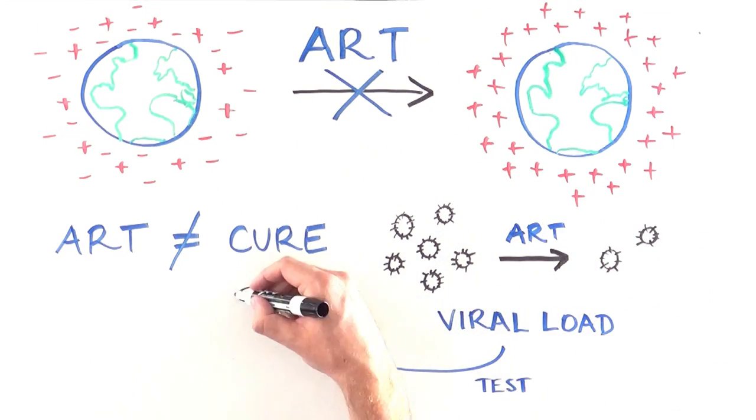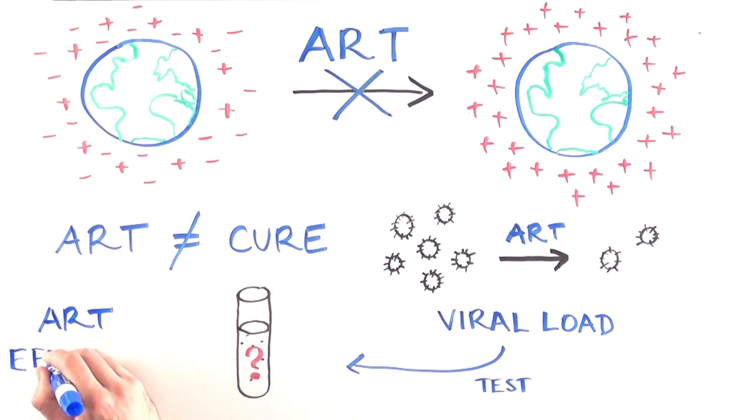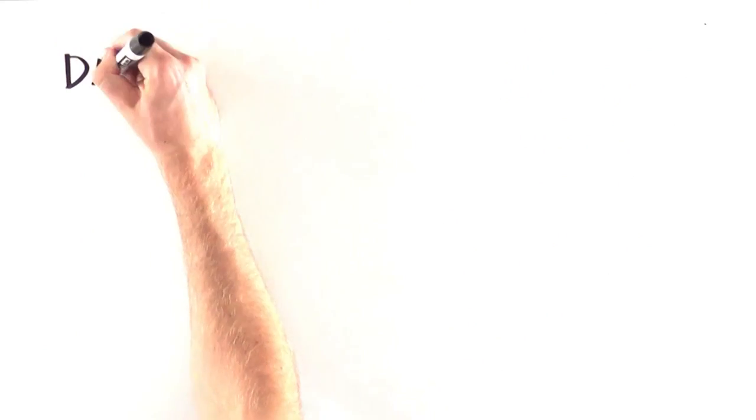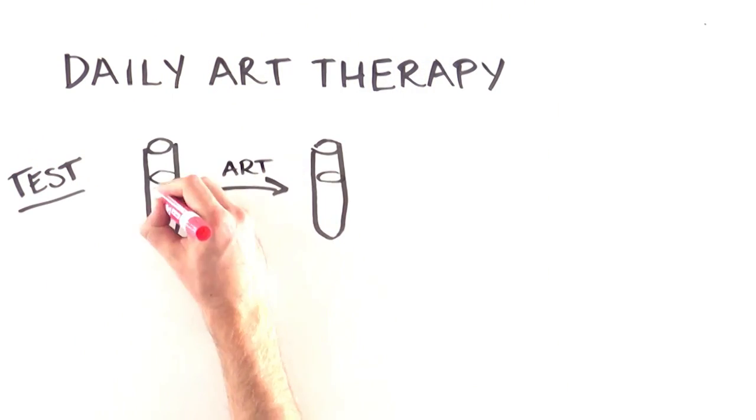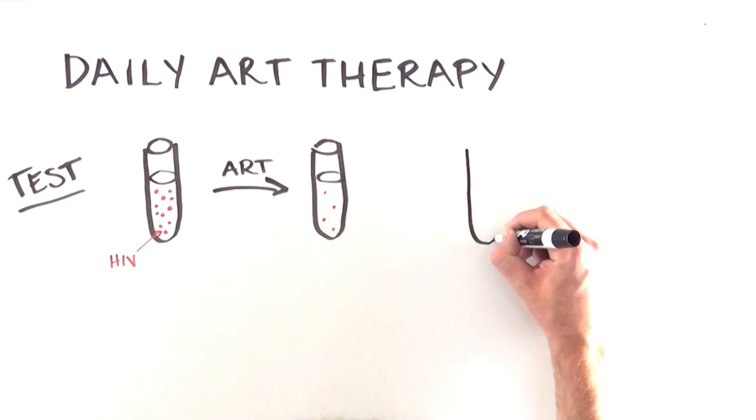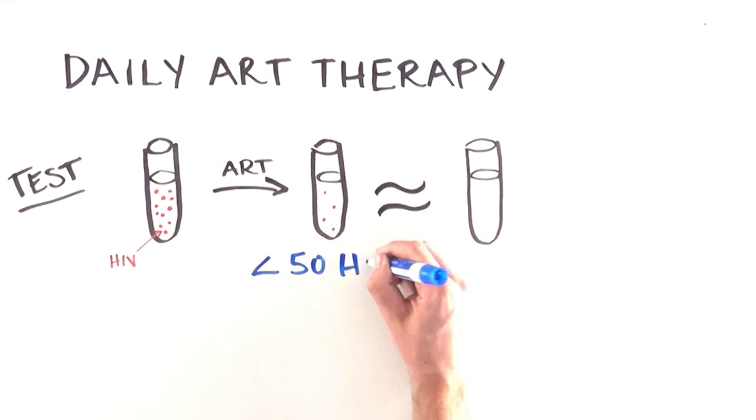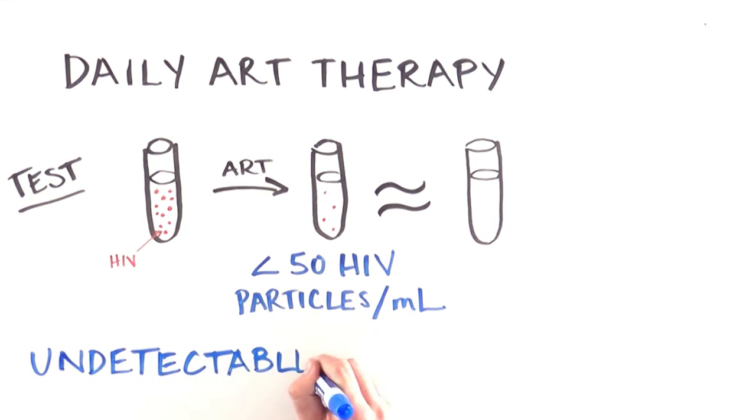Regular viral load testing helps measure how well antiretroviral therapy is working. When taken daily, effective antiretroviral drugs reduce viral load to a level below the threshold of detection for the test, which is currently 50 virus particles per milliliter of blood plasma. We call this undetectable viral load.